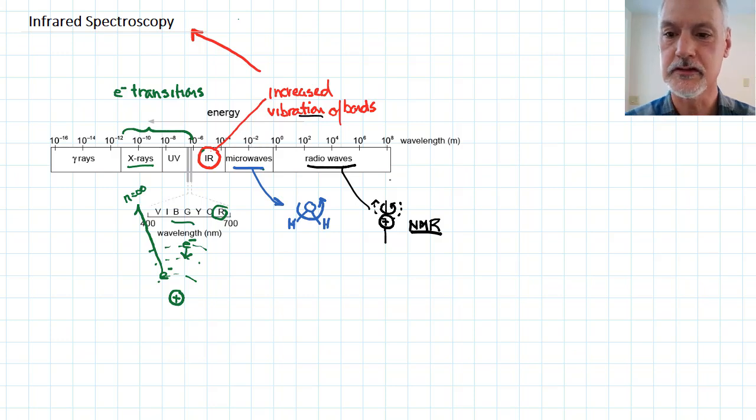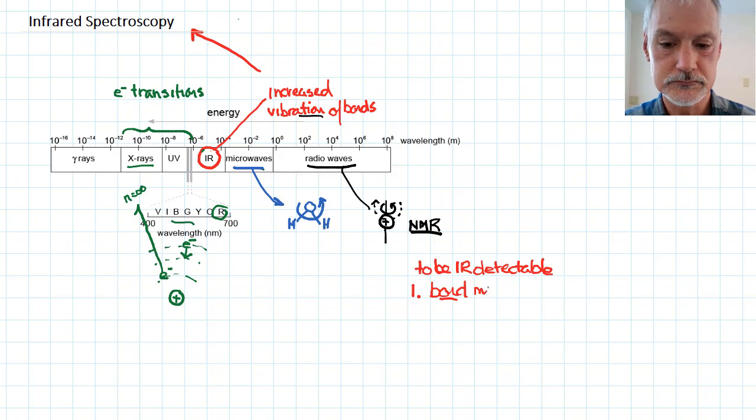But anyway, let's get back to this vibration of bonds. In order for a material to be detectable by infrared spectroscopy, it must possess the following properties. To be IR detectable, the bond must be polar—I'm emphasizing here the bond has to be polar, not the molecule. And the second criteria is the dipoles must move.